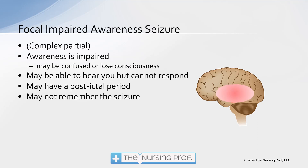A focal-impaired awareness seizure — what we used to call a complex partial — is different in that awareness is now impaired. The patient may actually lose consciousness or just be confused. They may be able to hear you but can't respond, and this patient may have a postictal period. The postictal period is caused by the brain using up glucose during the seizure. After the seizure, there's not enough glucose for conscious brain function and the patient may go into a coma-like state. They may not remember the seizure.